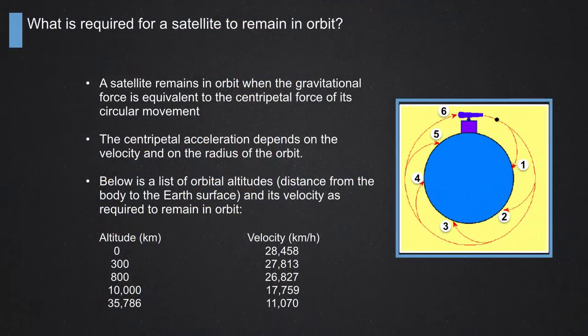Let's talk a little bit about some physics - what's required for a satellite to remain in orbit. We need speed. For each altitude of the spacecraft, we need the proper speed. If you have lower speed, the spacecraft will return to Earth. If you have higher speed, the spacecraft will tend to go to a higher altitude orbit. So to maintain orbit at a certain altitude, we need the correct speed.